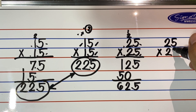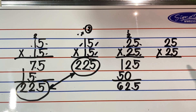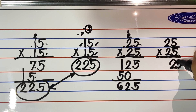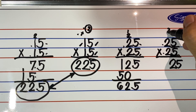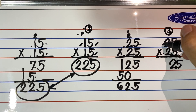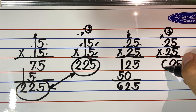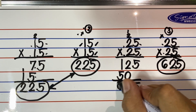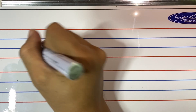For the short method: 25 times 25 — we need to arrive at the same final product of 625 without going through the long process. Multiply 5 and 5 and write 25 immediately below the equal sign. The tens digits are both 2 — think of the counting number next to 2, which is 3. Multiply 2 and 3 to get 6. The final product becomes 625. Compare — are they the same?